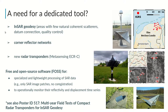It is a common practice in InSAR geodesy to install corner reflectors at areas lacking natural coherent scatterers to get a reliable displacement time series over critical zones such as landslides. Moreover, corner reflectors co-located with GNSS provide an InSAR datum connection and quality control.